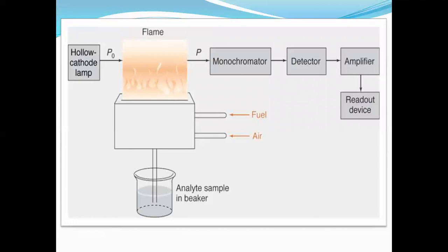This is the block diagram of atomic absorption spectroscopy. The first part is the hollow cathode lamp, which is the radiation source that passes radiation of different wavelengths. This is the flame into which our sample is introduced from the bottom, where the analyte sample from a beaker is passed through a fuel-air mixture and vaporized and atomized. A chopper is used in some instruments to convert steady light into pulsating light.